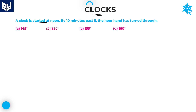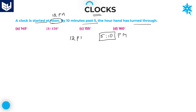A clock is started at noon — noon is nothing but 12 pm, that is afternoon 12 pm — by 10 minutes past 5. 10 minutes past 5 is nothing but 5:10 pm. Some people may think that 10 minutes past 5 means 4:50 pm, but that is the wrong way of thinking. 10 minutes past 5 means 5:10. We have to find how many degrees are covered by the hour's hand from 12 pm to 5:10 pm.